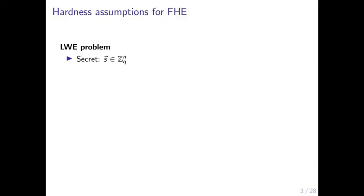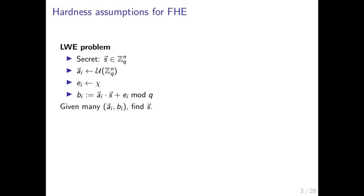The LWE problem is well known. Basically, we have a secret which is a vector mod q. We sample uniformly random vectors and noise terms, usually following a discrete Gaussian distribution. We compute the inner product of this uniform vector with the secret and add the noise term. Then, given many samples (a_i, b_i), we have to find the secret s. There is also the ring version of the LWE problem, in which we replace vectors by polynomials.